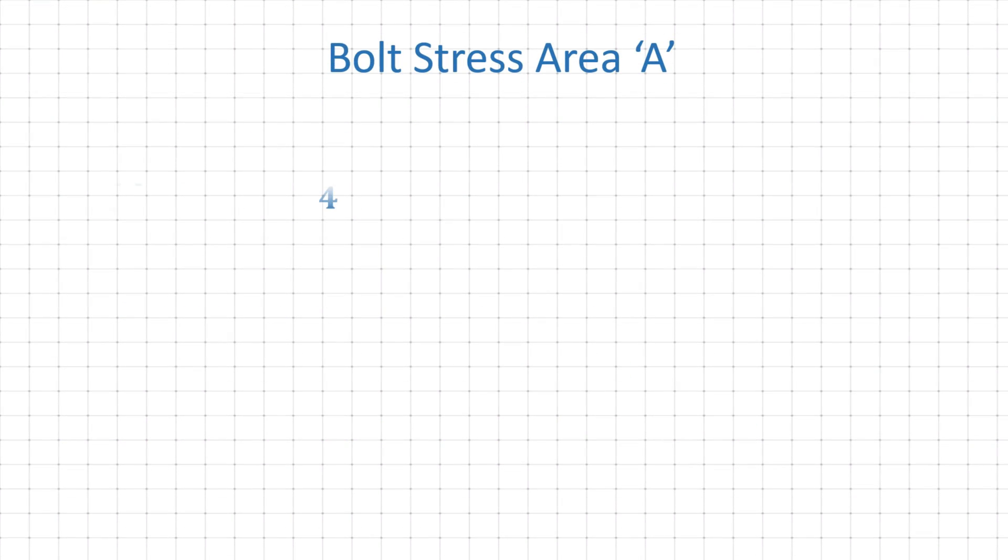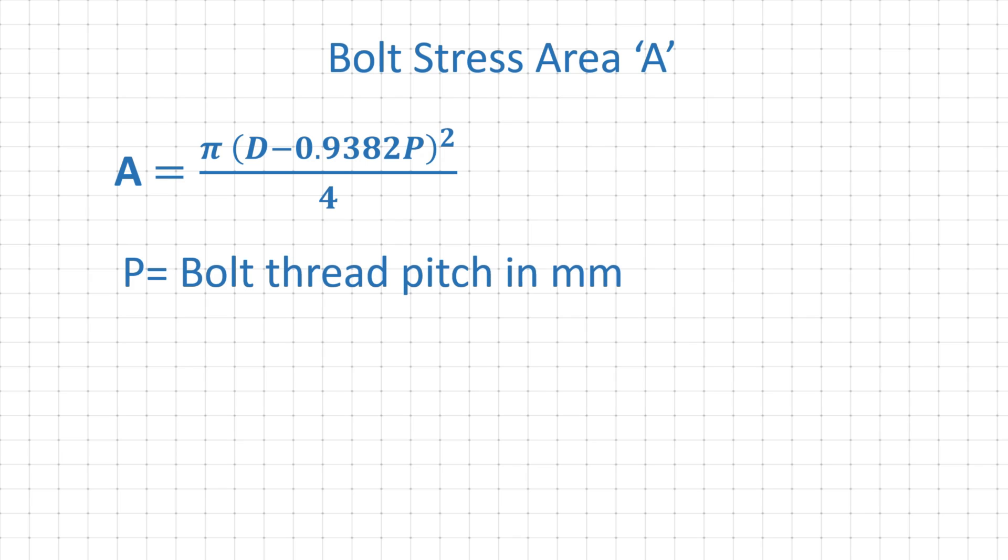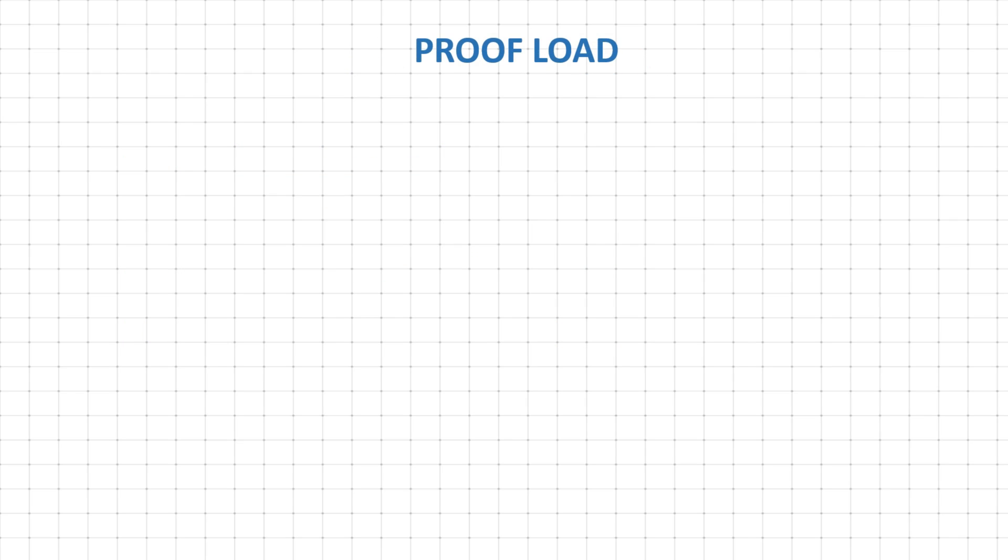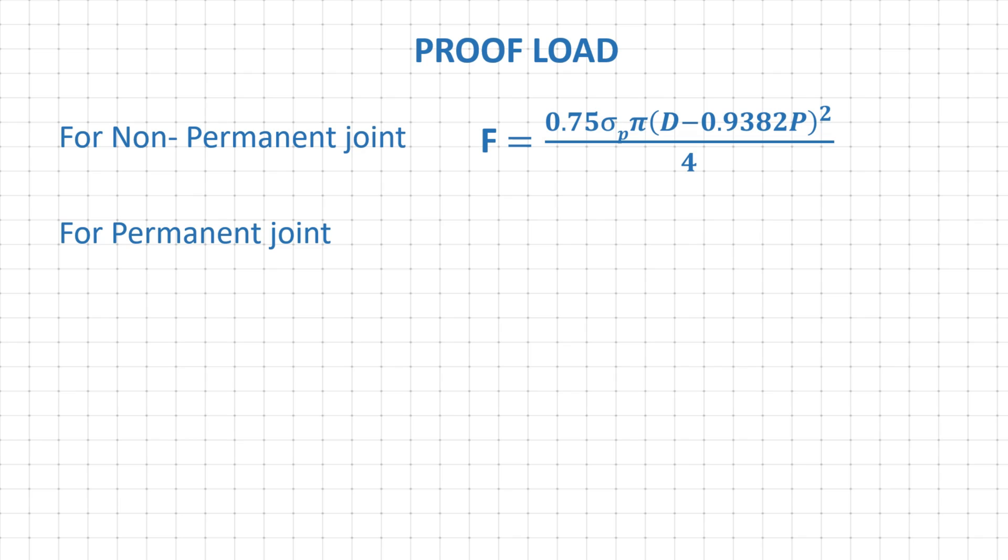The bolt stress area can be calculated using this relation. Here P is the bolt pitch in mm and D is the bolt nominal diameter in mm. Now if we use this bolt stress area, we can rewrite preload formula for non-permanent joint and for permanent joint.